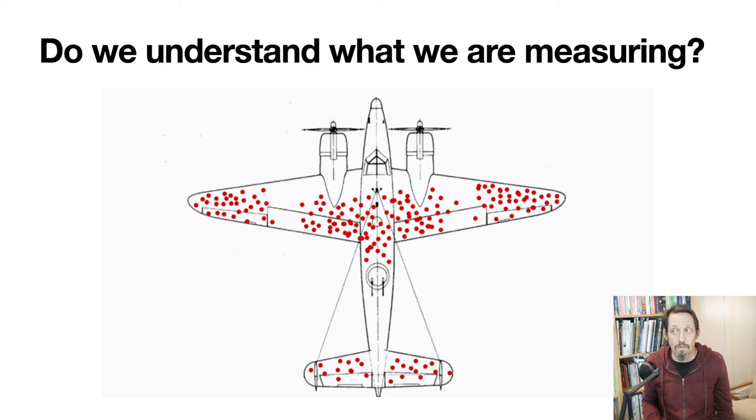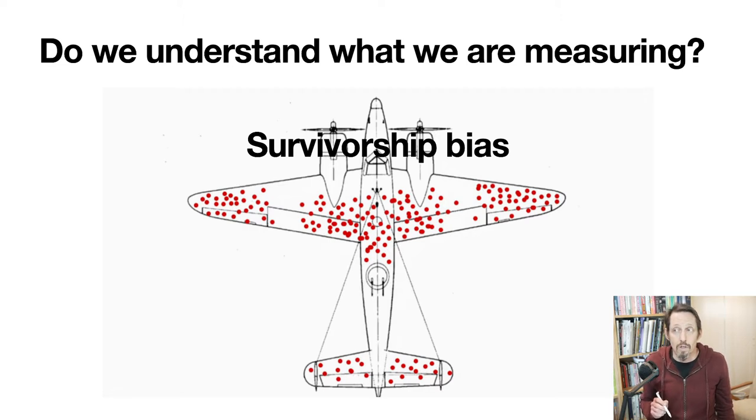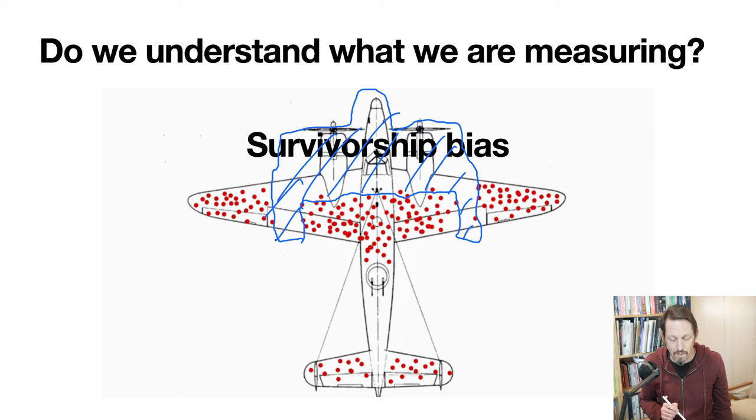Armoring an airplane is a terrible idea because they want to be light to work well, so you want to do it as little as possible. When they consulted with Wald, he realized they had it 180 degrees wrong. Really, what you're seeing here is survivorship bias. The airplanes that were coming home with bullet holes were the ones that were coming home. The ones that were not coming home were the ones taking bullet hits in this region—those were crashing.